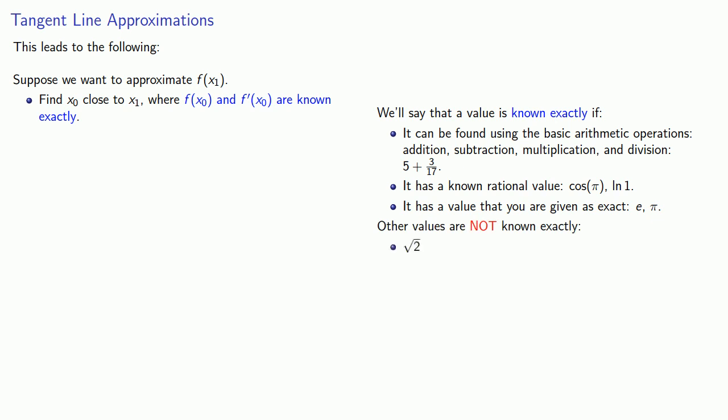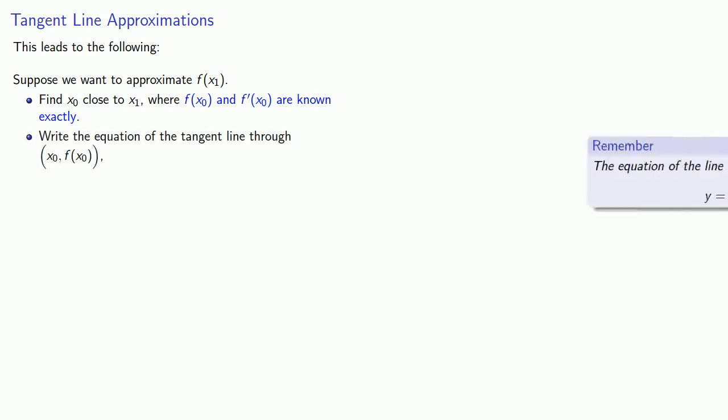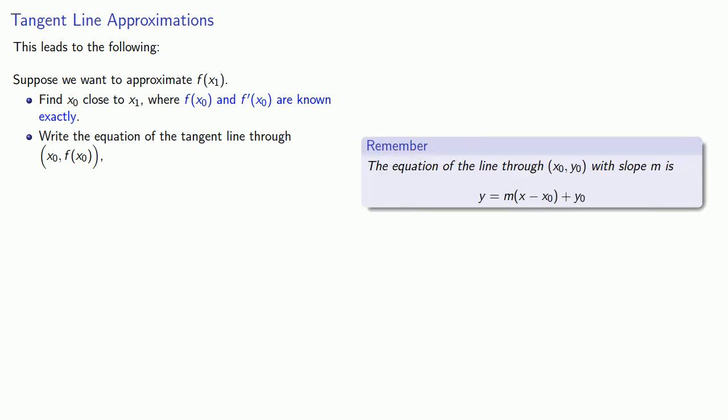Any other value we'll say is not known exactly — for example, square root of 2, sine of 5, or e squared — because these can't be found using the basic arithmetic operations, don't have a known rational value, and we're not given these as exact values. Because we carefully chose x₀ so that we knew the function value and the derivative, we know the point of tangency and the slope of the tangent line. So we can write the equation of the tangent line through the point of tangency, and then use the y value of the tangent line at x₁ to approximate the value of the function at x₁.